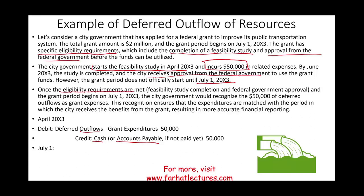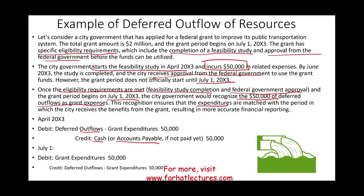On July 1st, once the eligibility requirements are met — the feasibility study completed and federal government approval received — the grant period begins. Now the city recognizes the $50,000 deferred outflow as grant expenditure. We debit expenditure for $50,000 and credit the deferred outflow to remove it. What remains is debit expenditure and credit cash, ensuring the expenditure is recorded in the proper period to match the grant revenue — complying with the matching principle. That is a deferred outflow of resources.